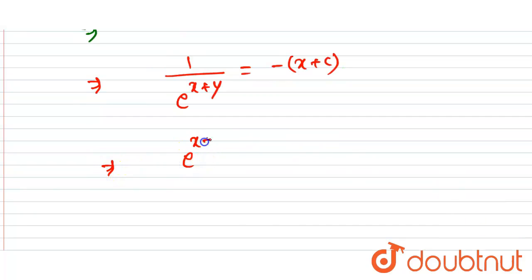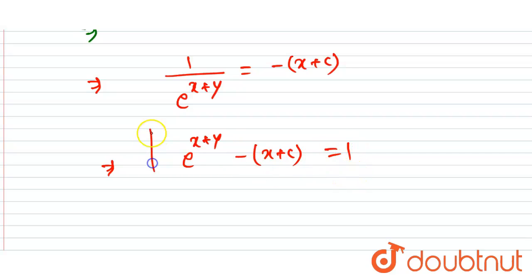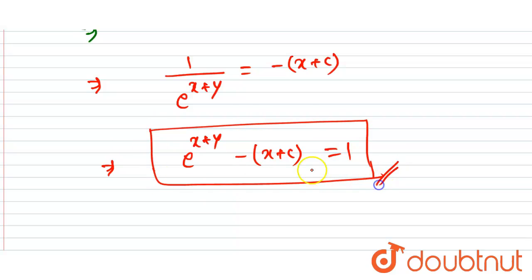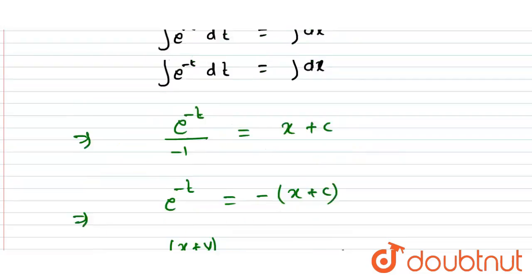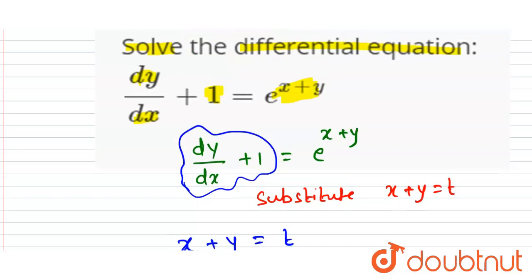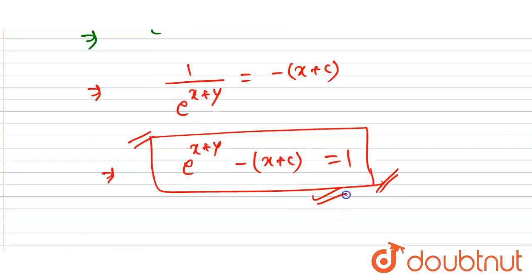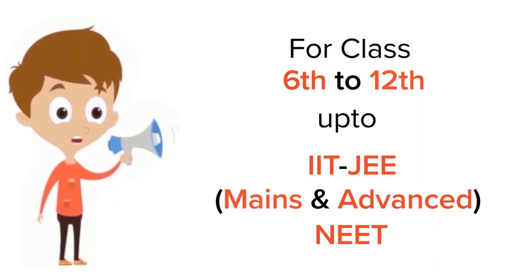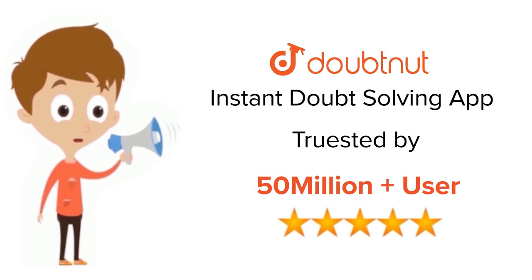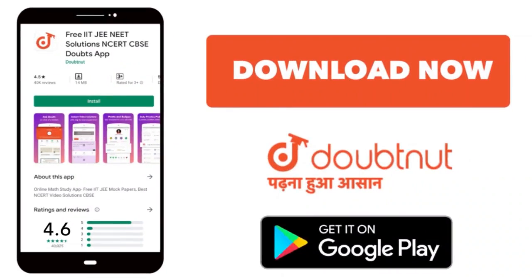So the final equation is e to the power x plus y multiplied by minus of x plus c equals 1. This is the required solution for dy/dx plus 1 equals e to the power x plus y. Thank you. For class 6 to 12, IIT JEE, and NEET level, trusted by more than 5 crore students — download DoubtNet today.